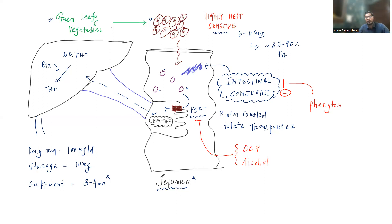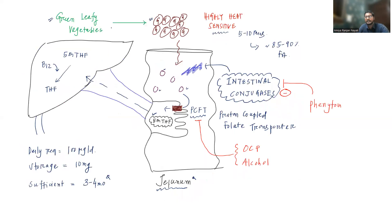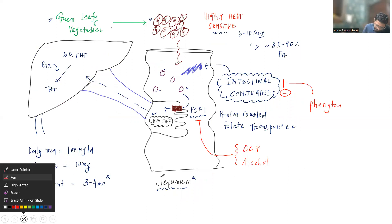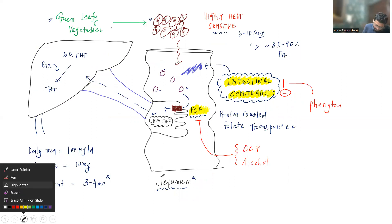To summarize the drugs that can cause folic acid deficiency: phenytoin inhibits intestinal conjugases; OCPs and alcohol inhibit the PCFT; and previously discussed methotrexate, trimethoprim, and 5-fluorouracil inhibit key enzymes in folate metabolism. By these various mechanisms, all these drugs can cause folic acid deficiency.